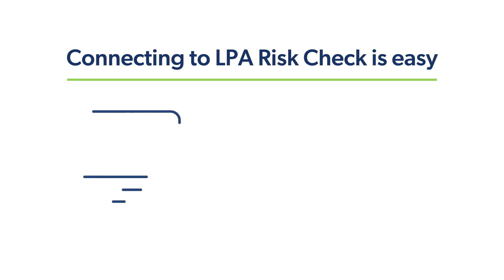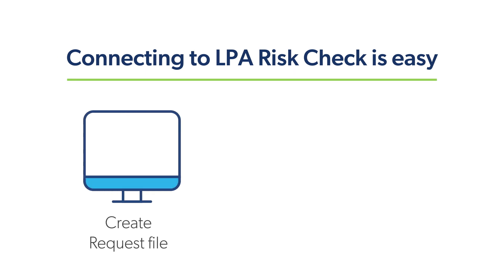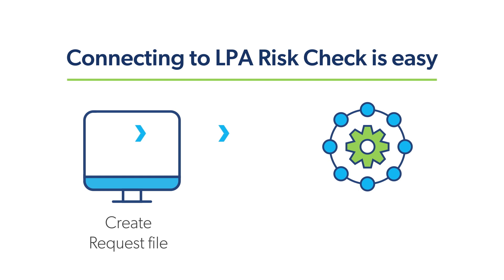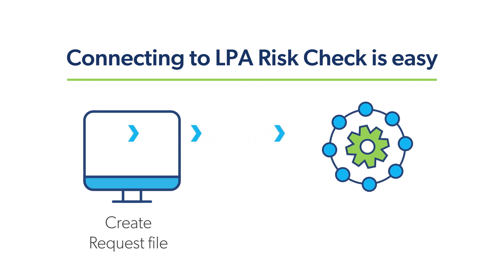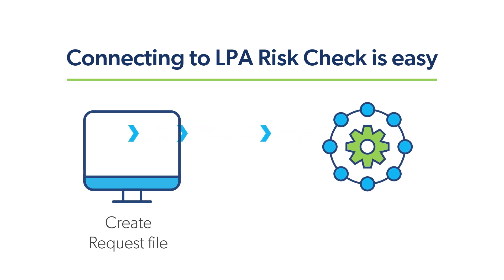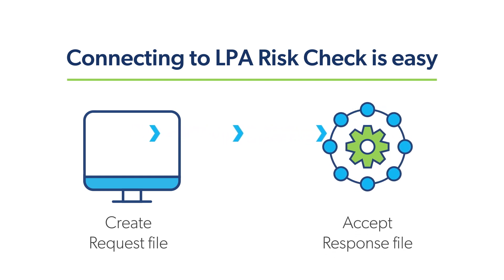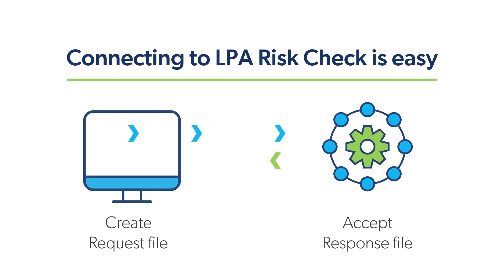To connect to LPA Risk Check, a lender simply submits a request from their POS or LOS to Risk Check, providing the required fields. Similarly, the lender's system will receive a response from Risk Check with the applicable risk assessment results.